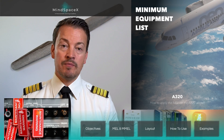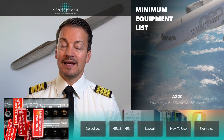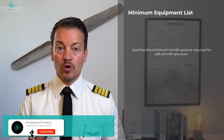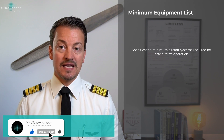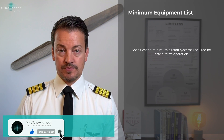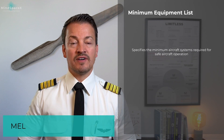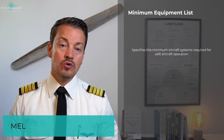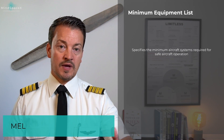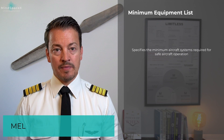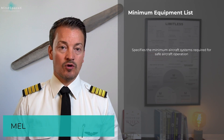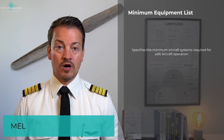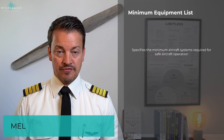For every aircraft, a minimum equipment list exists to specify the minimum equipment required for safe aircraft operation. This list will identify the items on an aircraft that cannot be inoperable when you want to dispatch the aircraft. We're not talking about failures happening in flight or after you've commenced the flight — we're talking about before the aircraft is taken for the flight.